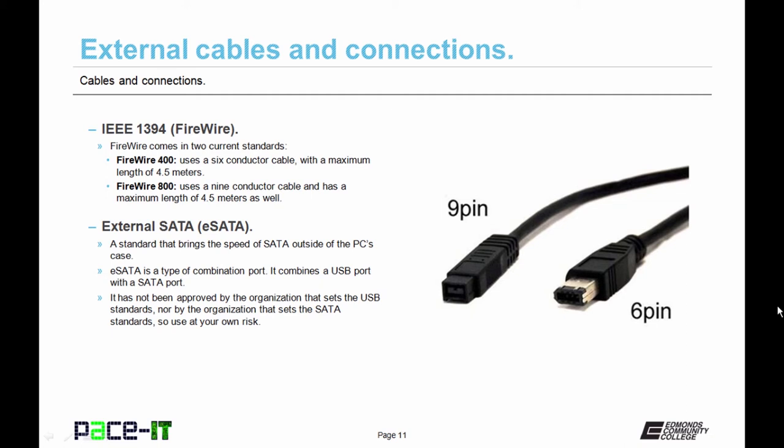Now a connection that you might come across on a PC is the eSATA connection, the external SATA connection. This is a standard that brings the speed of SATA outside of the PC's case. Now an eSATA port is a type of combination port. It combines a USB port with a SATA port. Now it has not been approved by the organization that sets the USB standards, and it has not been approved by the organization that sets the SATA standards. So use an eSATA port at your own risk.